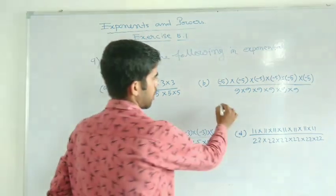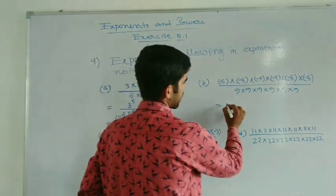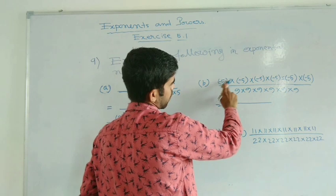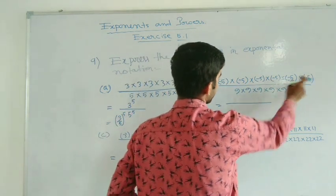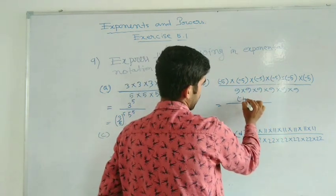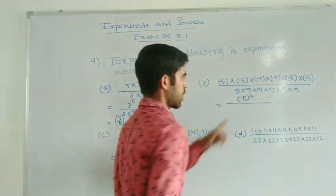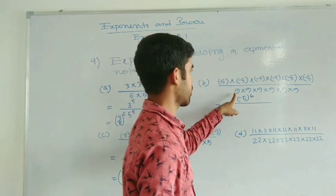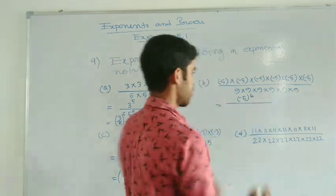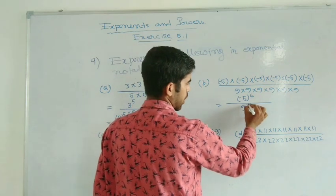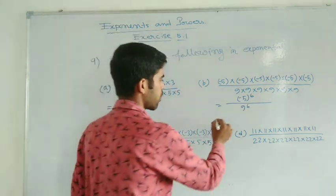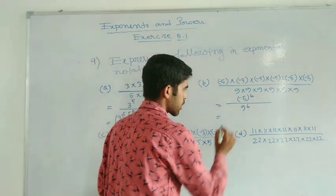Now number B — this one is similar. So how many factors are there? 1, 2, 3, 4, 5, 6 — so there is 5 to the power 6. And there also 9 to the power 6.